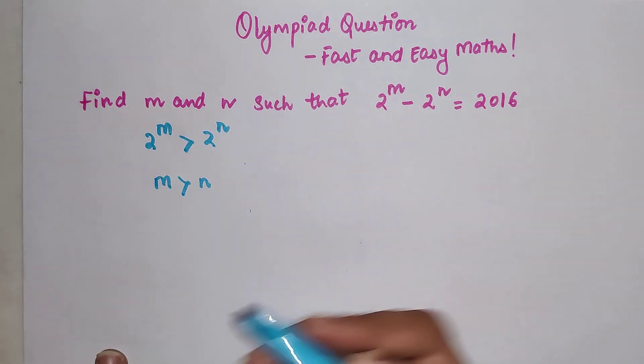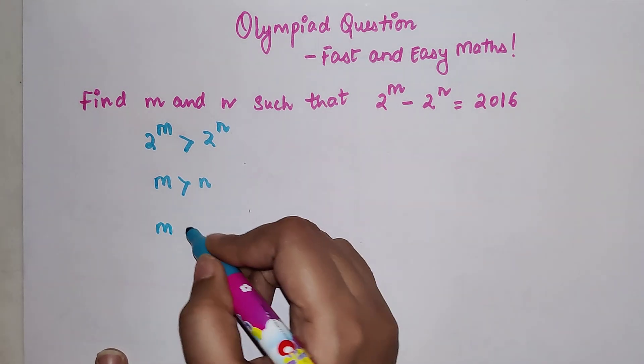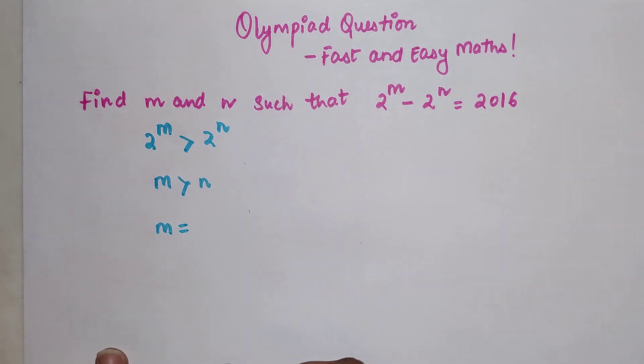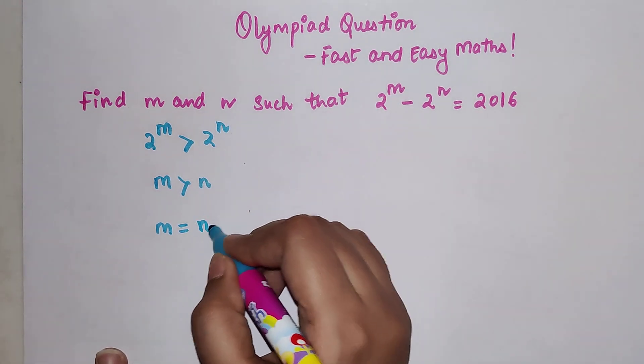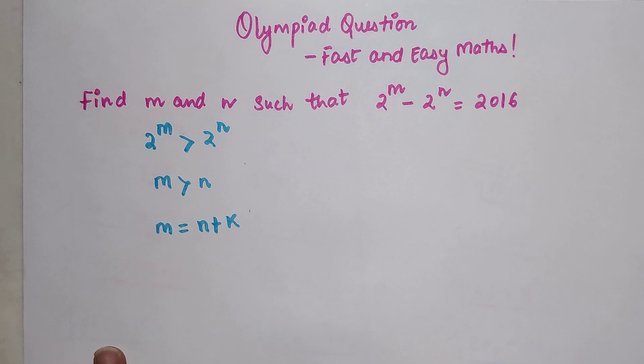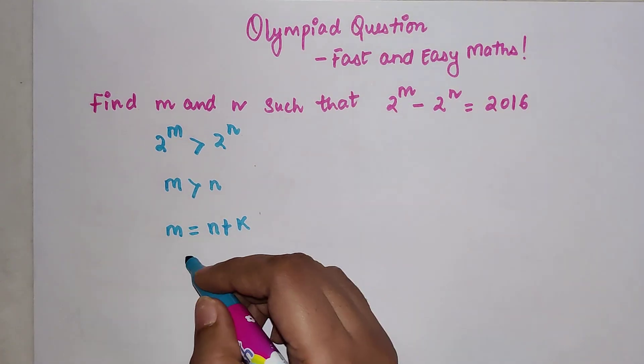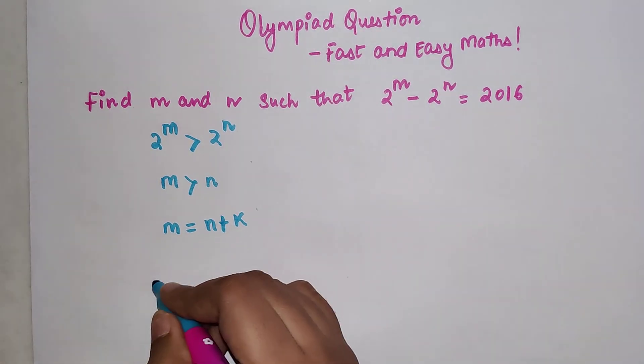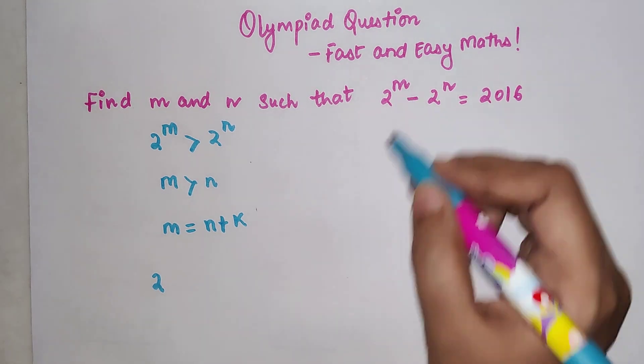So m equals n plus k. Now let's substitute this over here. We can write instead of m, I'm going to write n plus k minus 2 raise to n, which is equal to 2016.